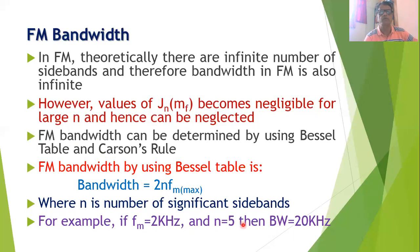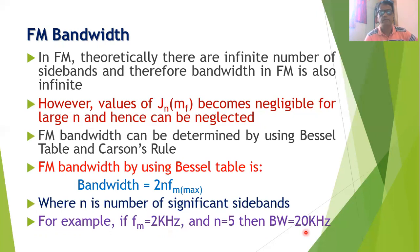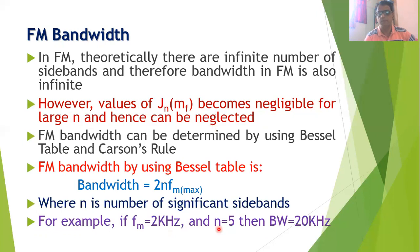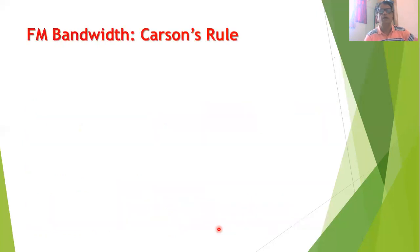The number of significant sidebands ultimately depends on the value of the modulation index MF, which you determine from the Bessel table.